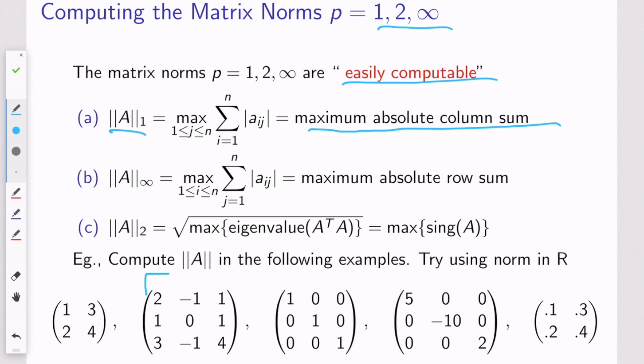Here I'd have absolute negative 1 plus absolute 0 plus absolute negative 1, that's 2. And then in this third column, I would have 6. So the 1 norm of that matrix would be 6, because 6 is the largest absolute column sum. The infinity norm is similar, but it turns out to be row sums.